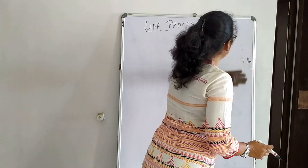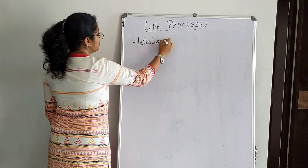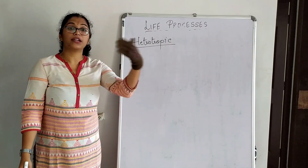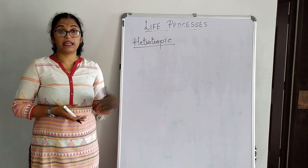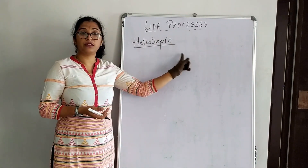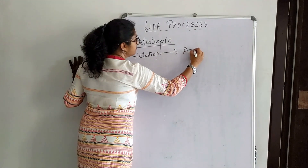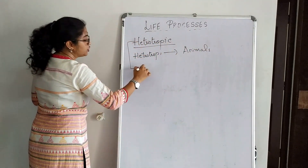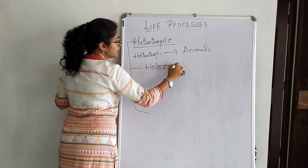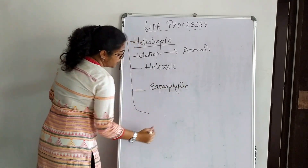Now let us study in detail about heterotrophic form of nutrition. Animals depend directly or indirectly on green plants for their food. Since they cannot carry out the process of photosynthesis, we call them heterotrophs. The organisms which carry out heterotrophic form of nutrition are known as heterotrophs. In heterotrophic form of nutrition, we have three types: holozoic, saprophytic, and parasitic.